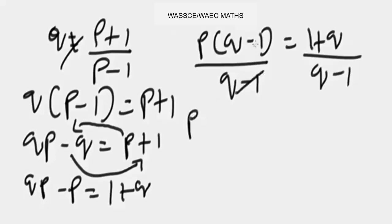Therefore, our p equals one plus q over q minus one. All right, now looking at this to make it look organized...